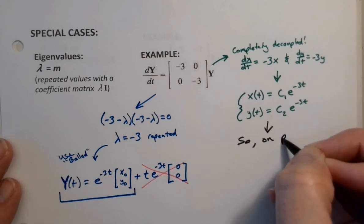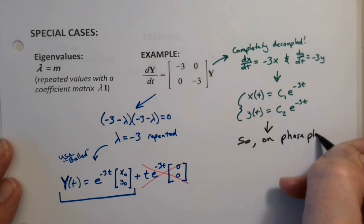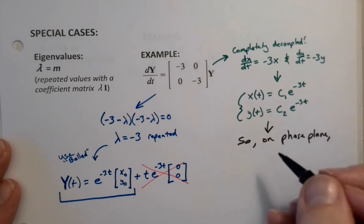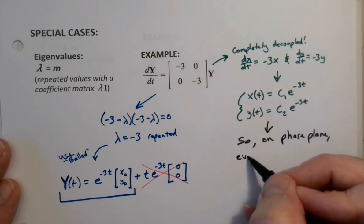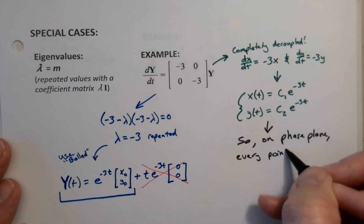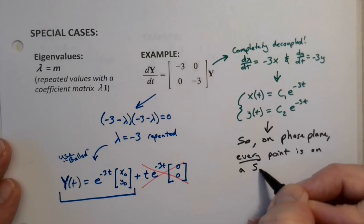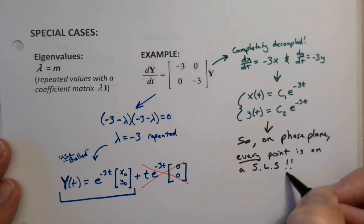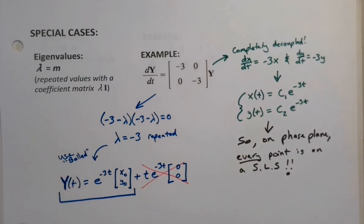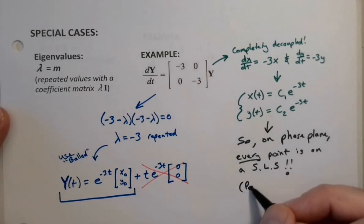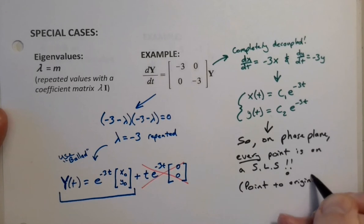So on the phase plane, this seems to be saying every point is on a straight line solution. So we've got to make some sense of what's going on. And of course all those straight line solutions point towards the origin. Because we're talking about exponential decay.